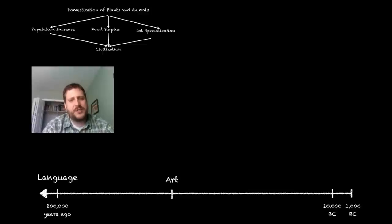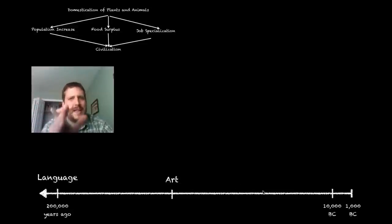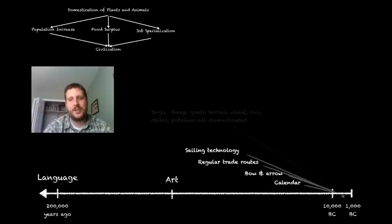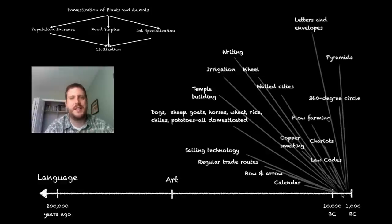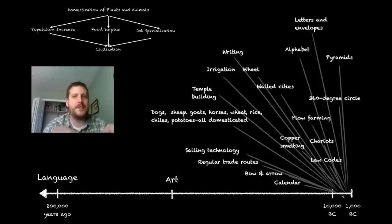Let's review the timeline of the first 200,000 years or so of human existence. On this timeline you can see language started around 200,000 years ago, then art, then some rudimentary tools. But take a look at how fast technology changes between 10,000 and 1,000 BC. In that time frame you've got calendars, bows and arrows, regular trade routes, sailing technology, domestication of dogs, sheep, goats, horses, wheat, rice, chilies and potatoes, temple building, irrigation, writing, wheels, walled cities, copper smelting, plow farming, chariots, law codes, the alphabet, letters and envelopes, pyramids, and the 360 degree circle. And this is just a small amount of things that you get in those years between 10,000 and 1,000 BC. Things really speed up as far as technology goes.